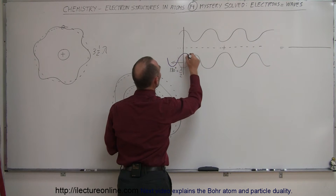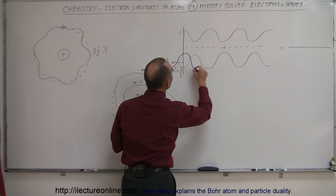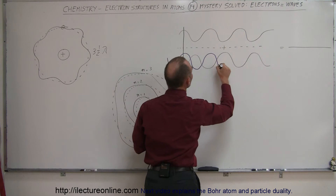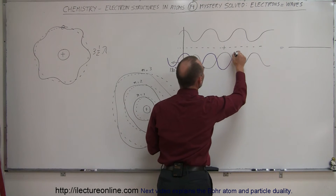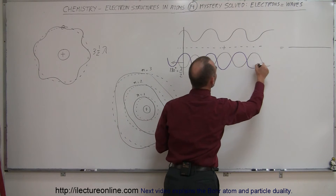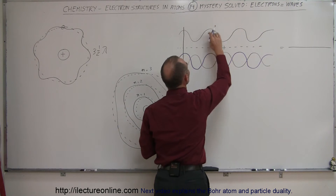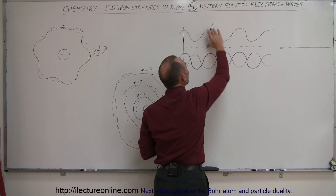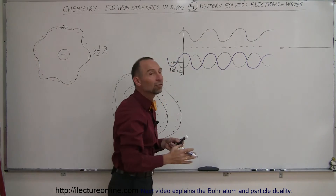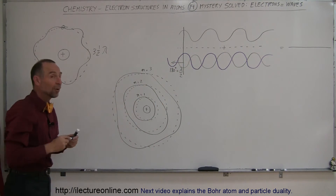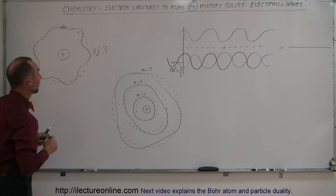Then the two waves would be exactly in phase. And then the purple wave with this wave — they would not cancel each other out, they would add to each other, and you would have what we call a standing wave pattern.